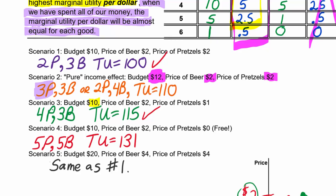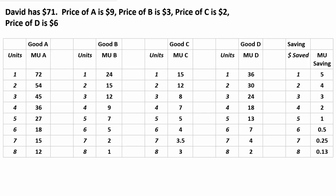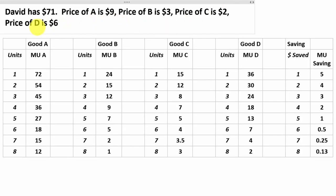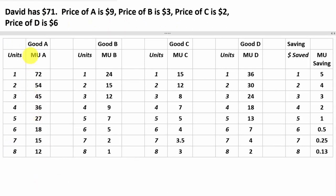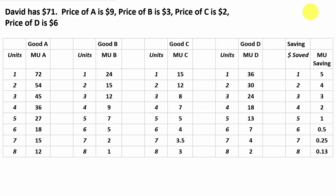That's the same prediction we got thinking about it differently before. Now, to make sure we understand calculating marginal utility per dollar and maximizing utility, let's do a more complicated example. Suppose someone named David has $71 and the price of A is $9, B is $3, C is $2, and D is $6. We have a table with marginal utilities for goods A through D for the first through eighth units. There's also a fifth option: David doesn't have to spend all his money - he might save some. This column shows the marginal utility of saving the first dollar, second dollar, and so on up to the eighth dollar.